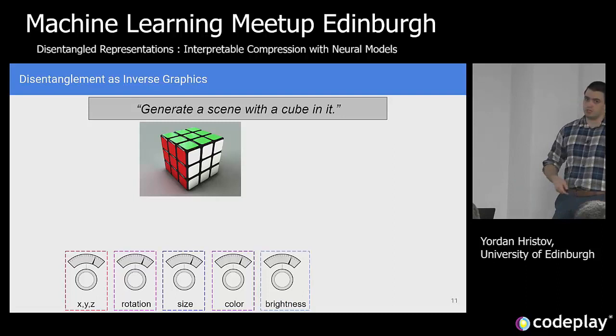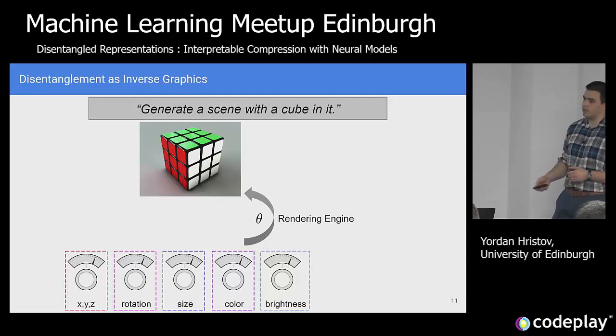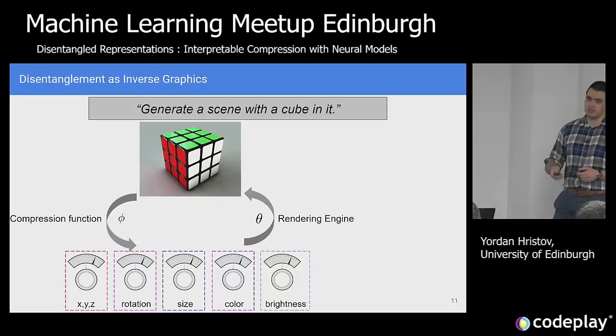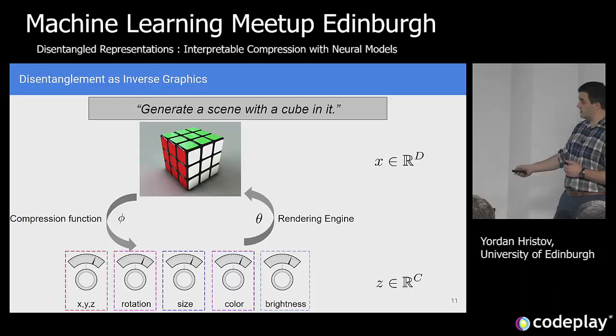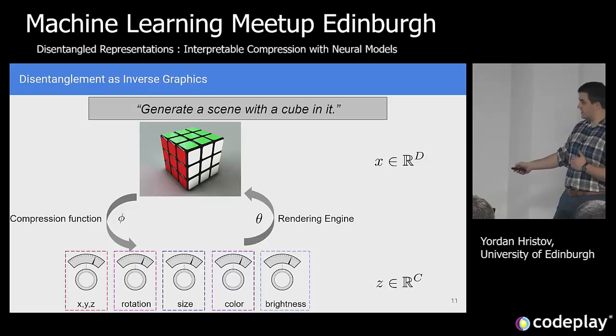I can change the size of the cube without changing its color, position, or anything else. This compressed version of the scene can be fed through a rendering engine to get an image. The field of inverse graphics does the opposite: given an image, can you generate a set of factors of variation that describe the image in this independent fashion? Keeping notation consistent, Z is the latent space, X is the thing you observe. X could be very high-dimensional; Z could be 10-dimensional.